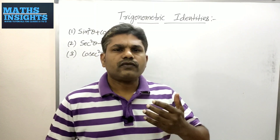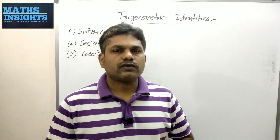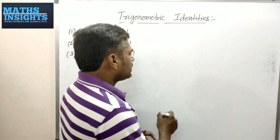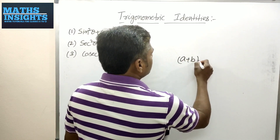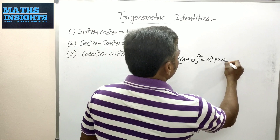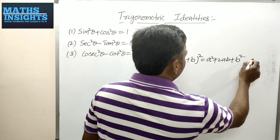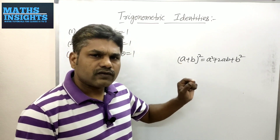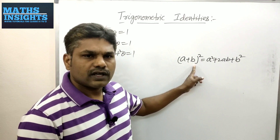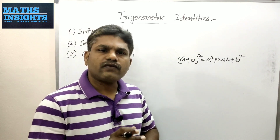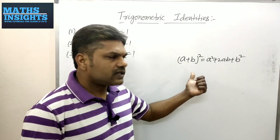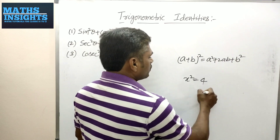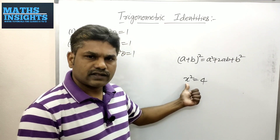Coming to examples: if you observe, (a + b)² equals a² + 2ab + b². Here a and b are the variables, and a² + 2ab + b² is called an identity. Why? Because if you take whatever values for a and b, you will get the same value on both sides. That's why it is called an identity.